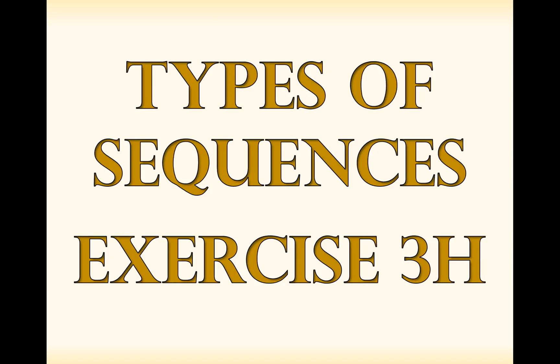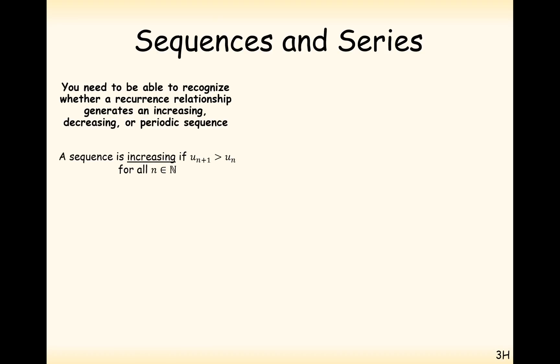Hello there and welcome to the series of videos going through the content of A-level maths. Here we're looking at types of sequences, so we can answer questions from exercise 3h. Now, certain sequences are given certain labels. A sequence which is increasing is if u_{n+1} is bigger than u_n for all n existing in the natural numbers. This basically means the sequence of numbers is always getting bigger each time, strictly bigger. It can never go to the same number as before. It always has to get bigger.